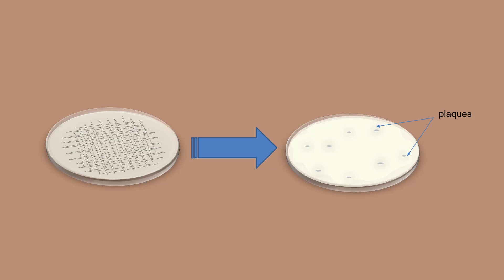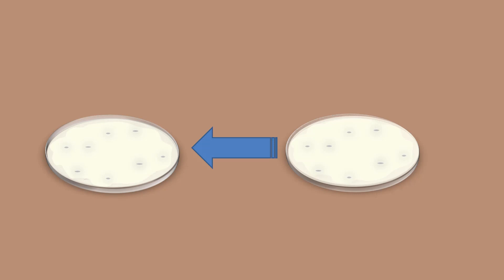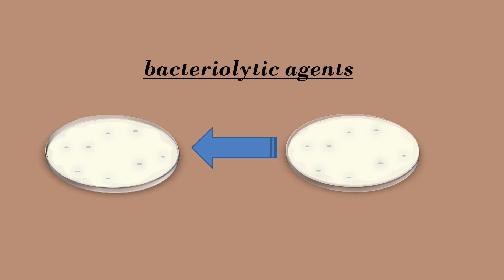He soon discovered that these plaques contained dead bacteria. Twort also found that he could transfer the unknown plaque-forming agents from one bacterial culture to another, and thus he called these unknown agents bacterolytic agents.